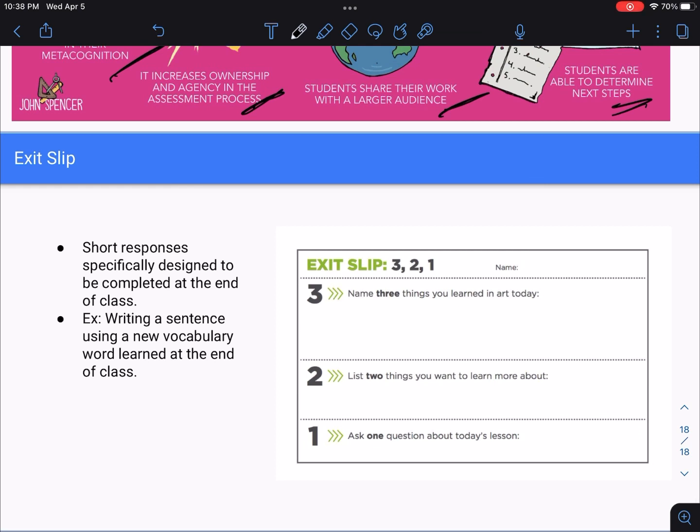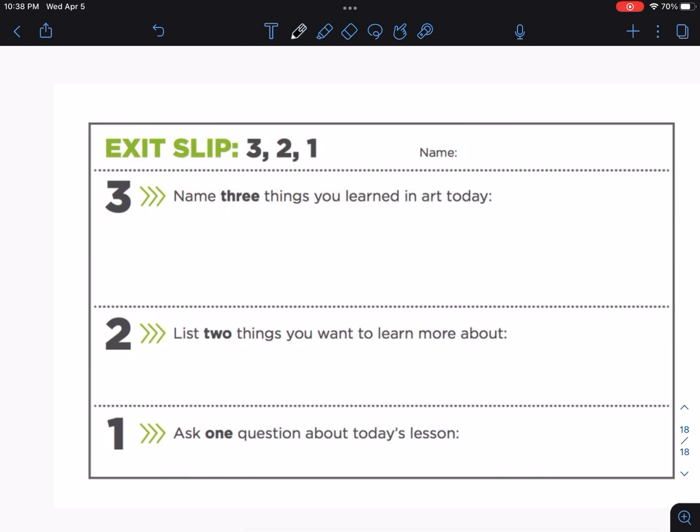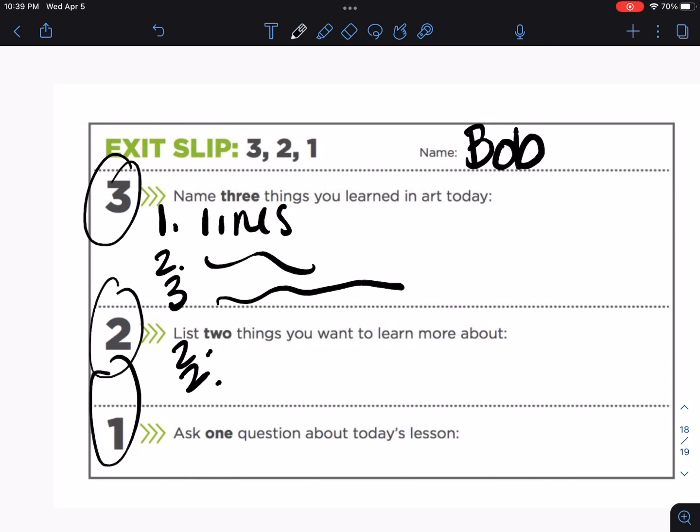Now here's the last part and then you get a break. We're going to be talking about exit slips. Now these are essentially short responses designed to be completed at the end of class. An example of one would be writing a sentence using a new vocabulary word that we learned. So I would be like, hey we learned the word right triangle, can you please use that in a sentence? Here's an example of an exit slip. The student would just write their name right here, Bob or whatever, and then three things you learned in art today. I learned about lines, shapes, and curves, and then they'll list two things they want to learn about, and then a question about today's lesson. So it's the 3-2-1 exit slip strategy. It's great, it's amazing. I highly recommend you try this out and remember it for your exam.